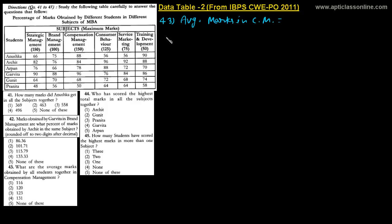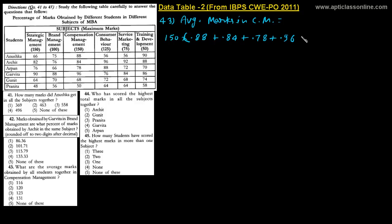Anusha's marks: 150 × 0.88. Archit's marks: 150 × 0.84. We can take 150 outside, so we sum the decimals: 0.88 + 0.84 + 0.78 + 0.68 + 0.96 + 0.68 + 0.50. These represent the percentage scores for each of the candidates.